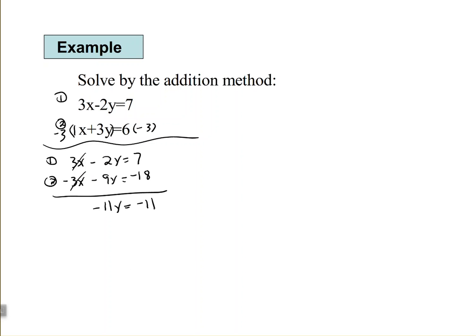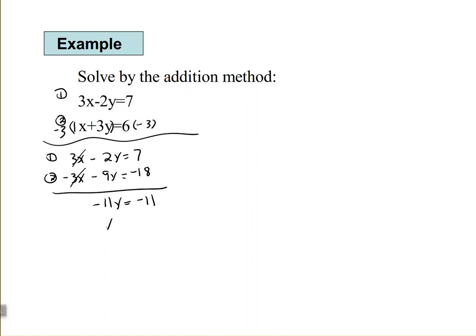All right, so, we were left with one variable. We can solve for this variable by dividing both sides by negative 11, and y equals 1.